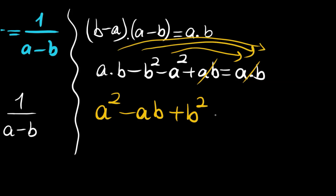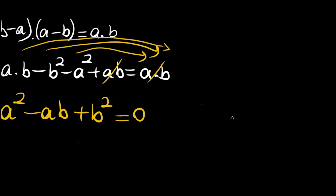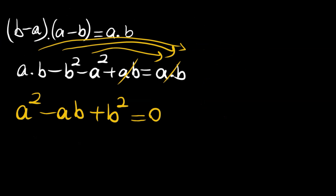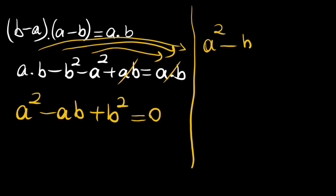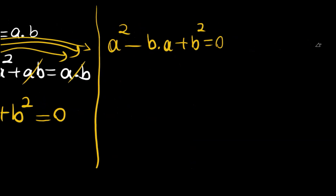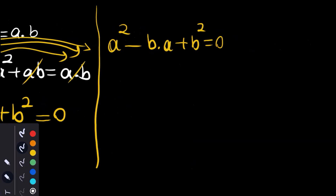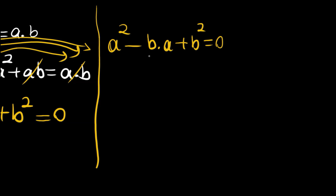This is equal to 0, and this looks like a quadratic. Let me arrange this as a squared minus b times a plus b squared is equal to 0. Our variable here is a, and these are just coefficients.